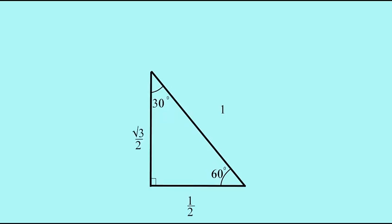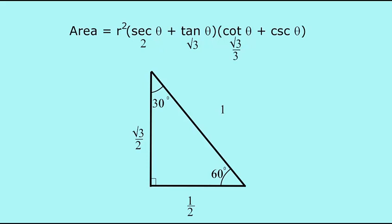Now we plug those numbers into our formula. For θ we'll use 60°. Secant is hypotenuse over adjacent, which would be 2. Tangent is opposite over adjacent, which is √3. Cotangent is the inverse of tangent, so that would be √3/3. Cosecant is hypotenuse over opposite, which simplifies to 2√3/3.